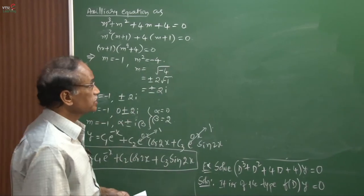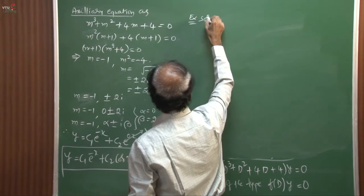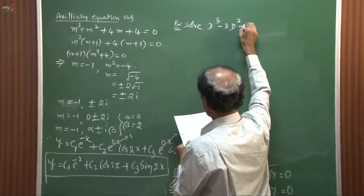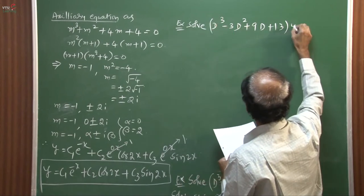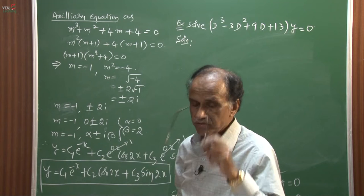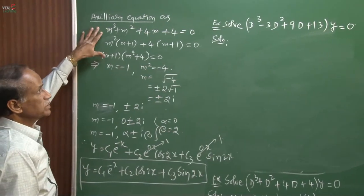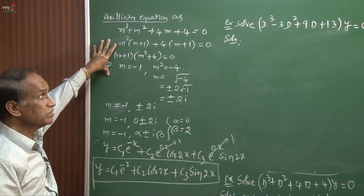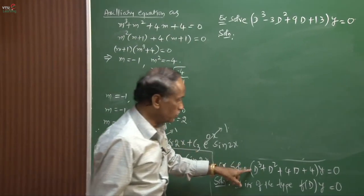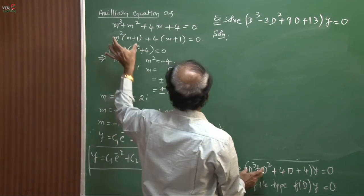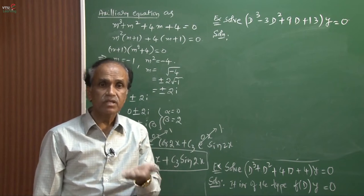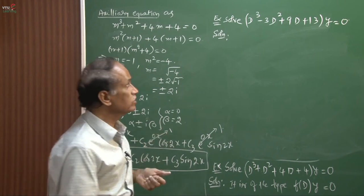The next example: solve (D³ − 3D² + 9D + 13) operating on y = 0. This is another variety where you can expect something different from all three previous problems. Sometimes it gives a common coefficient, sometimes it won't. Here, unlike m³ + m² + 4m + 4 where common factors existed, here we cannot take common factors — so we must go for the inspection/trial and verification method.